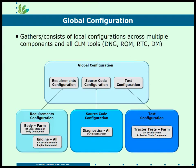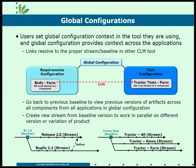A user can just set the global configuration, which then sets the correct local configuration and right components for that product across the entire lifecycle. Most sites will use global configuration — it's a second level of stream above those local configurations. And somebody is going to be the master of configurations, setting up the local streams, setting up the global streams, setting up the components, creating new streams or baselines as necessary. Someone's going to keep track of that entire structure and where changes are flowing from and to, to make sure baselines and streams are created correctly.